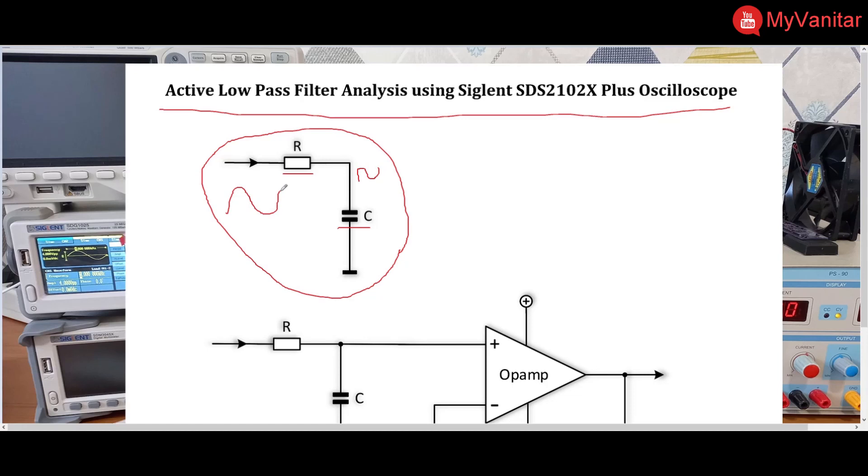For example, if this is a load—I'm not good at drawing by mouse—if this is a load, the impedance of the load affects the characteristics of this filter.